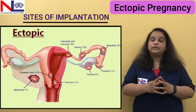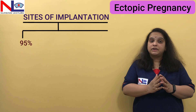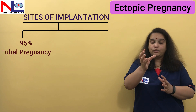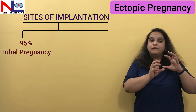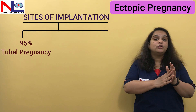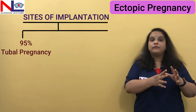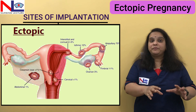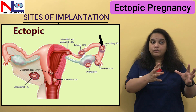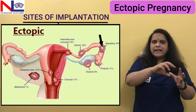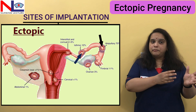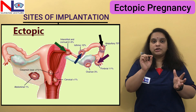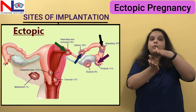There are various sites of implantation in ectopic, and in 95% of conditions the fertilized zygote is implanted in the tube itself — the Fallopian tube — so it is called tubal pregnancy. This is the most common type of ectopic. Within the tube, there are four parts: the widest is the ampullary part, which is the most common site. Next is the isthmus, then the fimbrial part, and the least common site is the interstitial part — the part of the tube lying within the wall of the uterus.